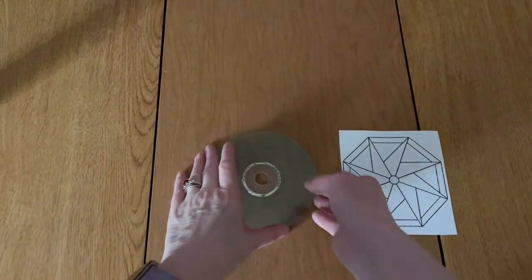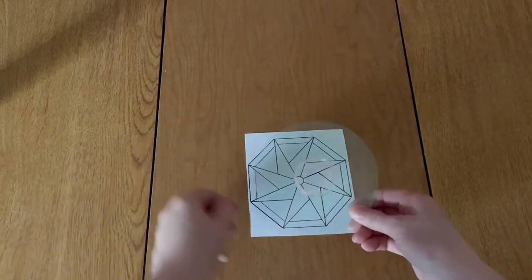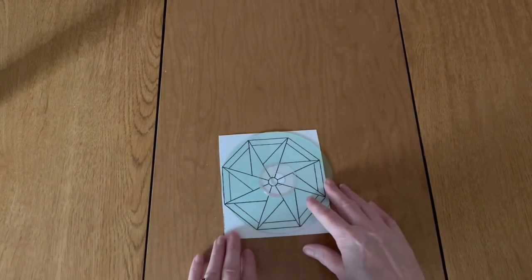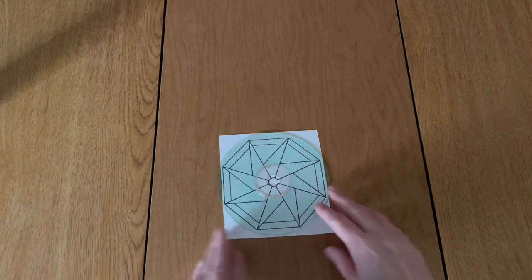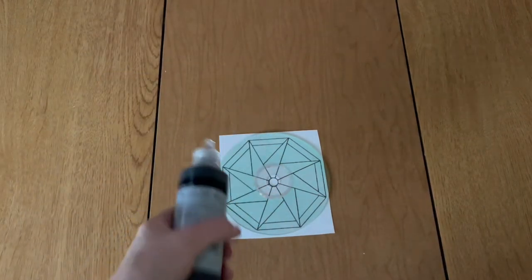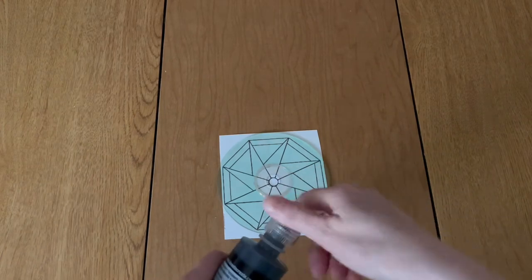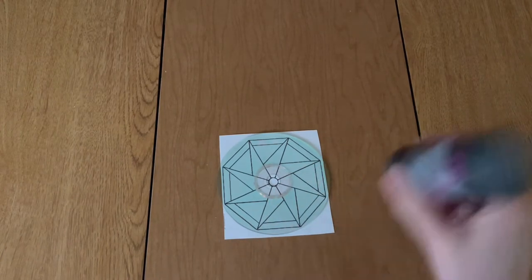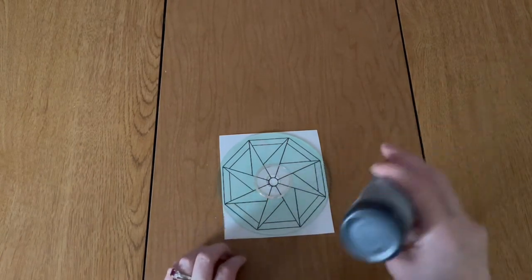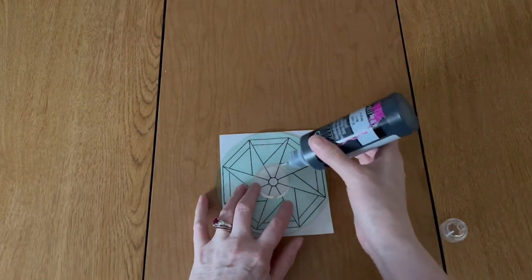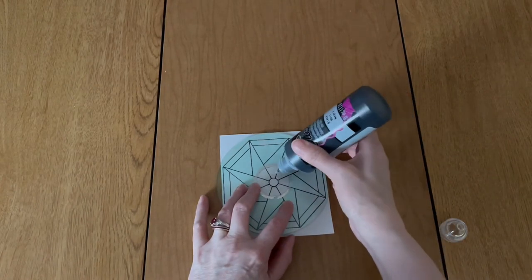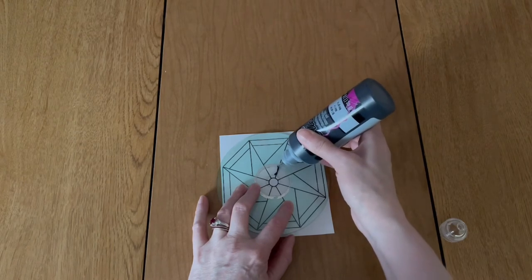And then you're gonna use your puffy paint or your hot glue, you're just gonna make it raised. And now what you're going to do is you're just going to trace the pattern that you chose with your paint.